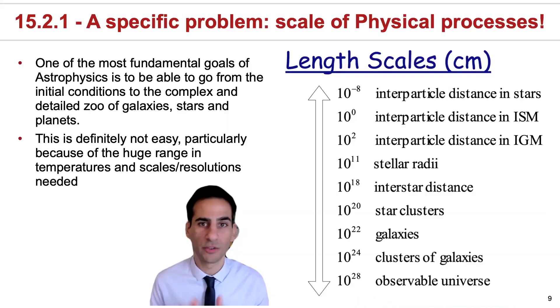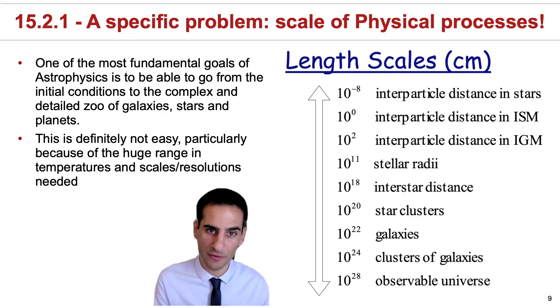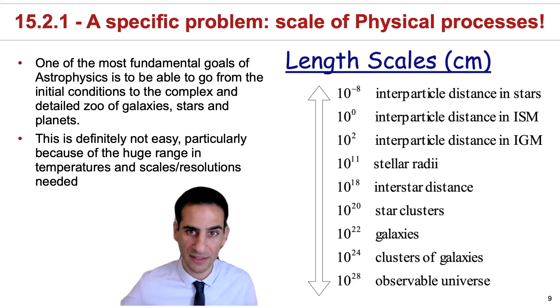To get a better idea of this, it's really important to have a look at length scales. Remember that astronomers use CGS a lot, so we're going to use centimeters. Now, one of the main problems of going from initial conditions to the full galaxy zoo and everything that is inside galaxies is the necessity to simulate and track physical processes and interactions.